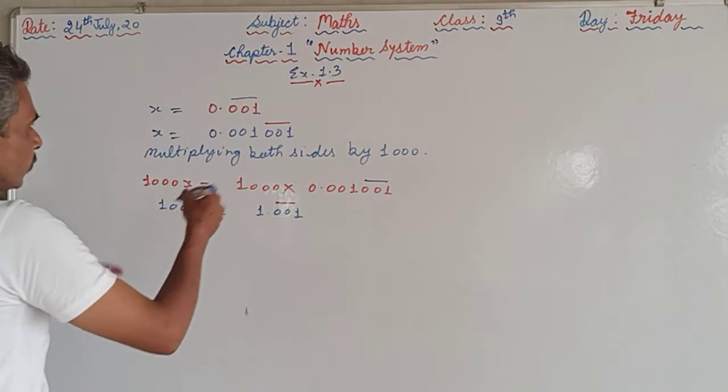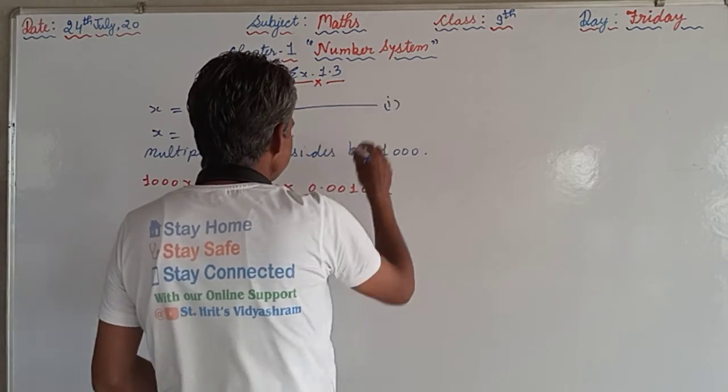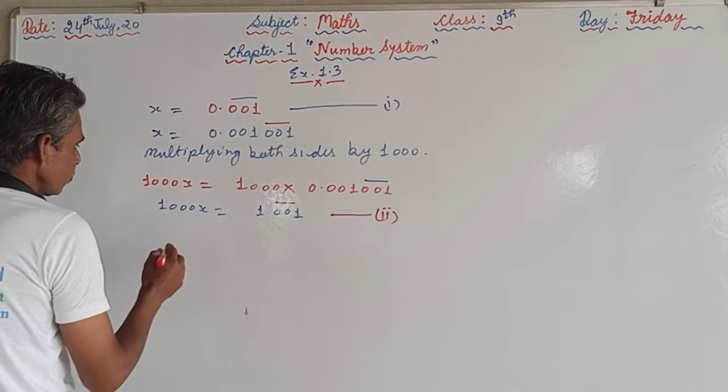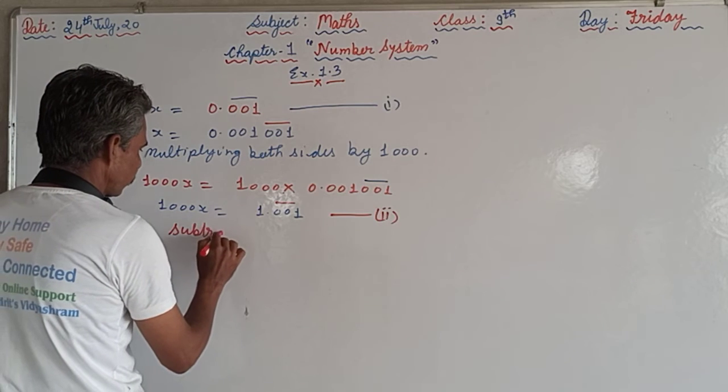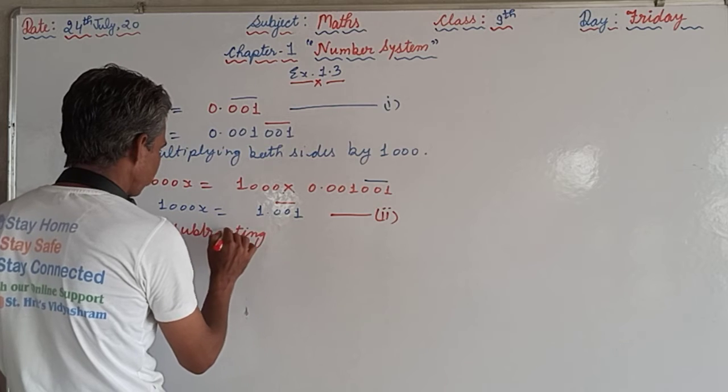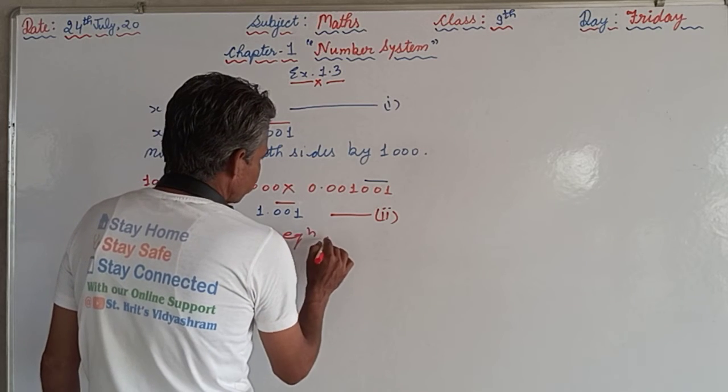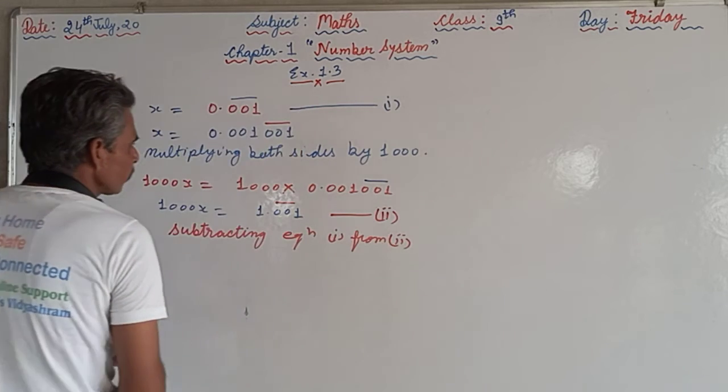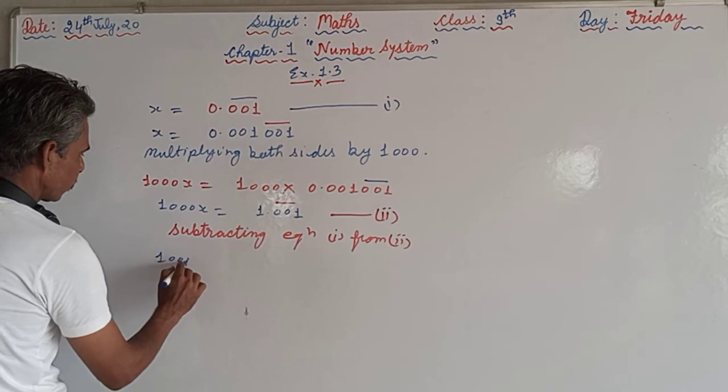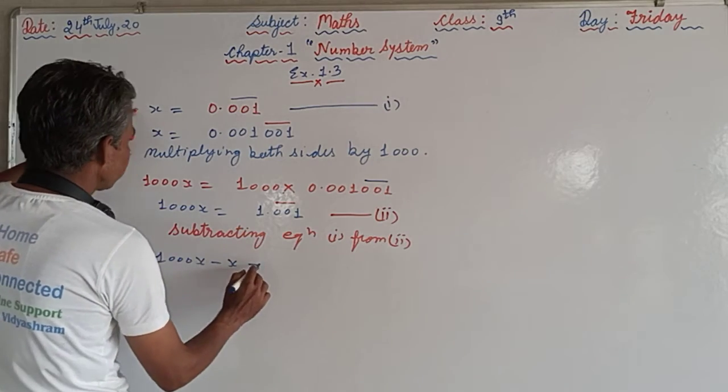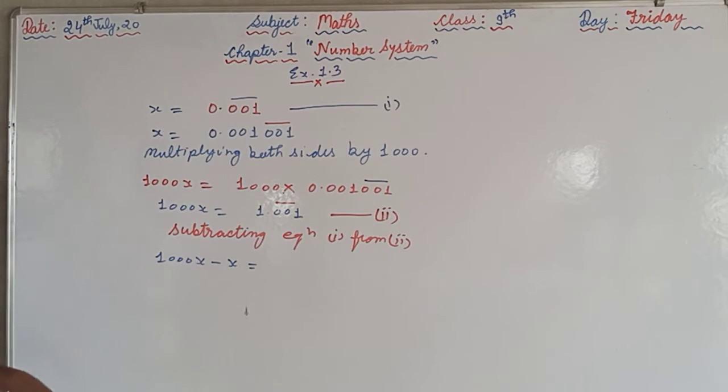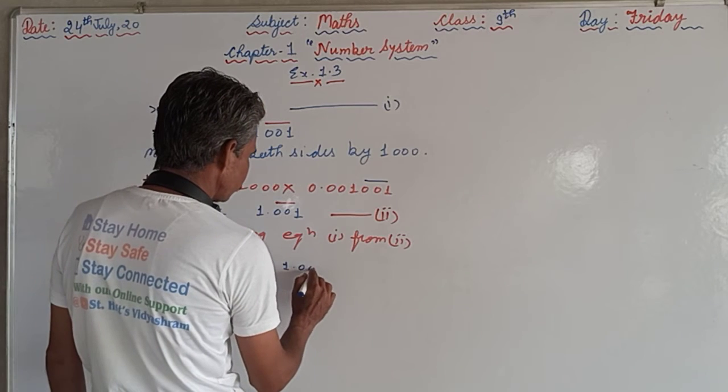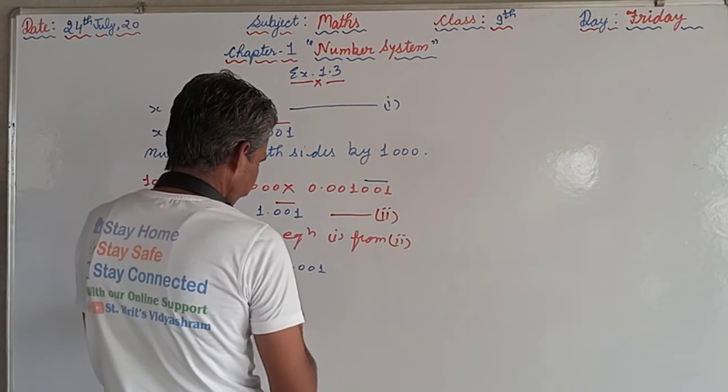Suppose this is equation 1, and this is equation 2. Subtracting equation 1 from 2, we will get 1000x minus x. We will subtract the left hand side from the left hand side and we will subtract the right hand side from the right hand side.